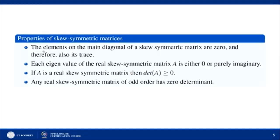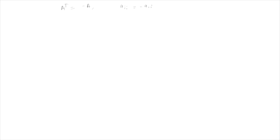The first property of a skew symmetric matrix: the elements of the main diagonal of a skew symmetric matrix are all 0, and therefore its trace is also 0. This is easy to show: if A is skew symmetric, then Aᵢᵢ = −Aᵢᵢ for all i (since Aᵀ = −A), which implies Aᵢᵢ = 0 for all i. This means diagonal elements are all 0 and hence the trace, which is the sum of diagonal elements, is also 0.